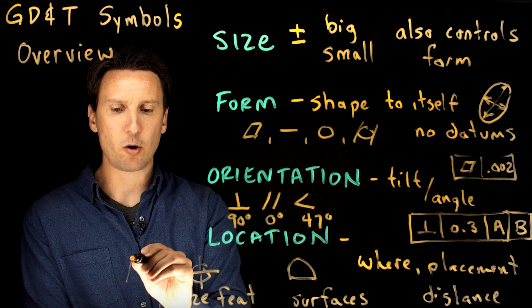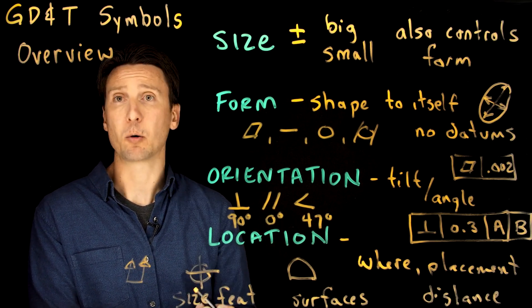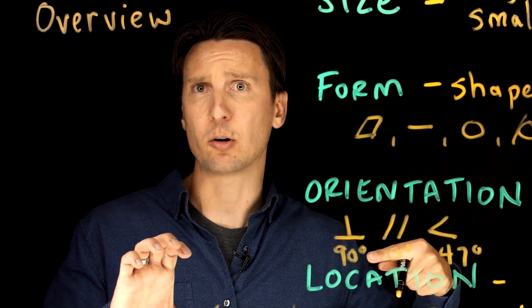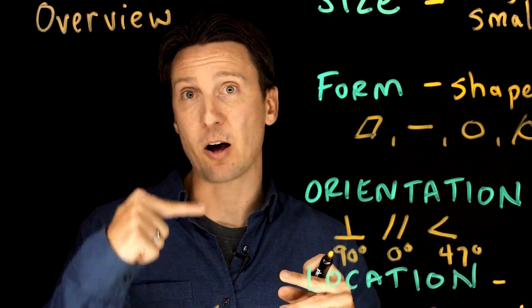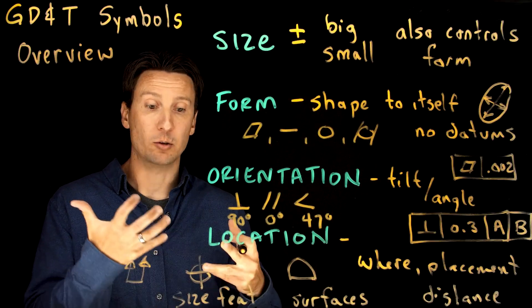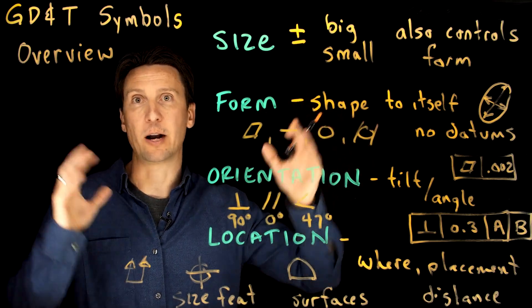There is maybe one more that can fall in this category, and that would be runout. Runout is also a location tolerance. It's specialized though because it's used for coaxial controls. It has to be a datum that's on the center, an axis, where these could be used more versatility, used in holes, pins, slots, surfaces that are off the center or anywhere on your part.